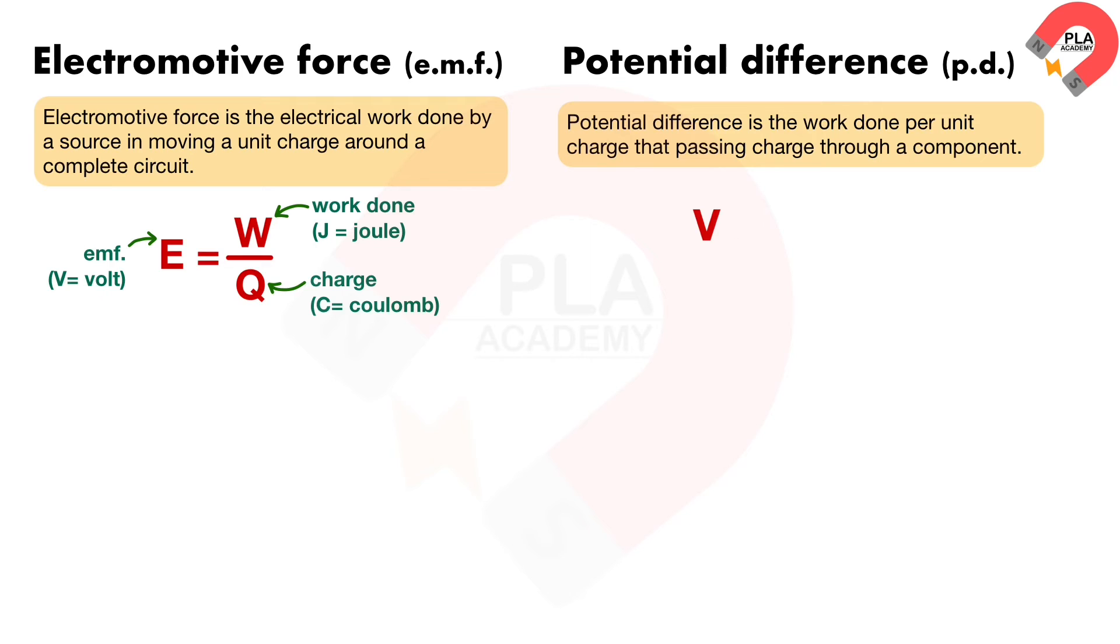We can write the equation as V equals W over Q, where V is the potential difference or PD that is measured in volts, W is the electrical work done in joules, and Q is the charge in coulombs. Volt is joule per coulomb.